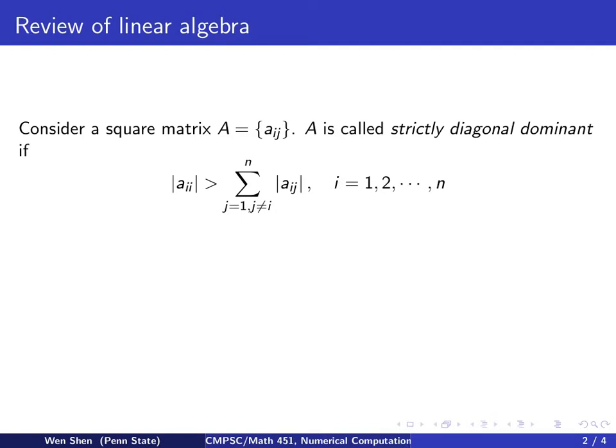First, we consider a square matrix A, and we denote its element by Aij in the corresponding position ij. The matrix A is called strictly diagonal dominant if the following holds. As the term diagonal dominant indicates, the diagonal elements in the matrix A are dominating in the following sense.